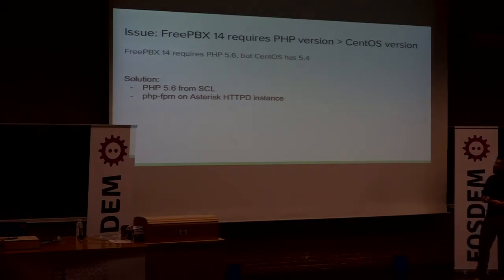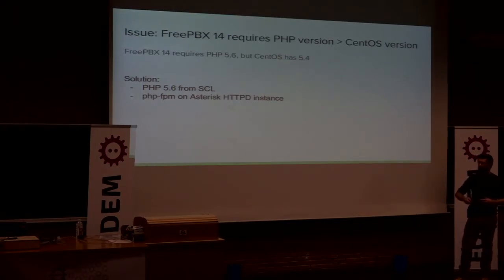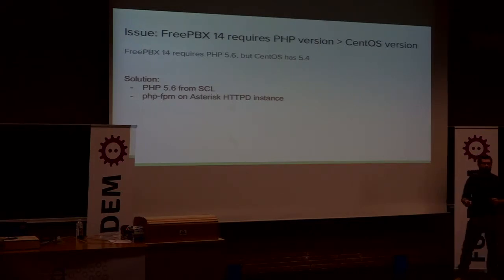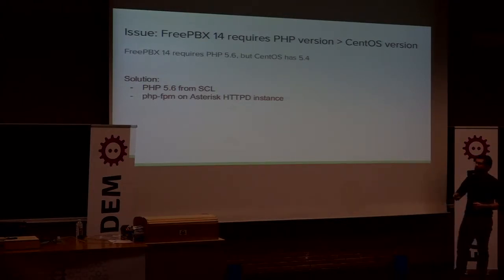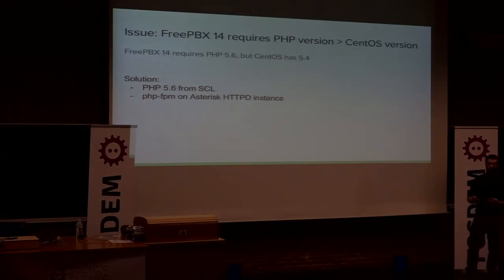We installed PHP from SCL, and since we already use a separate HTTPD instance, we configured it to use PHP-FPM from the newer PHP version. This means two versions of PHP run on the system simultaneously. The drawback is that when you run a shell command needing the newer PHP — for example, using the FreePBX console — you need to load the environment first. The advantage is that it will be very easy for us to migrate to PHP 7, because only FreePBX in the system will use that version.